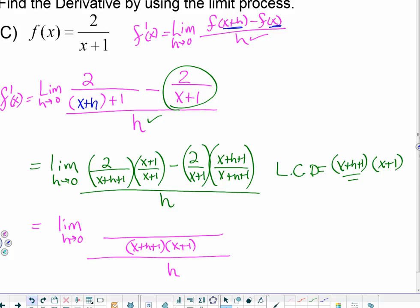On the top now, I'm going to take my 2 and distribute, giving me 2x plus 2. I'm going to take a negative 2 and distribute it. So I was thinking of this plus minus idea that will give me minus 2, minus 2h, minus 2, I forgot x, minus 2x on the first.